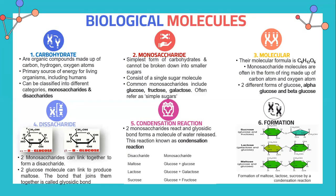Biological molecules. Let's look into carbohydrates — organic compounds made up of carbon, hydrogen, and oxygen atoms. They are the primary source of energy for living organisms, including humans. Carbohydrates can be classified into different categories: monosaccharides and disaccharides.